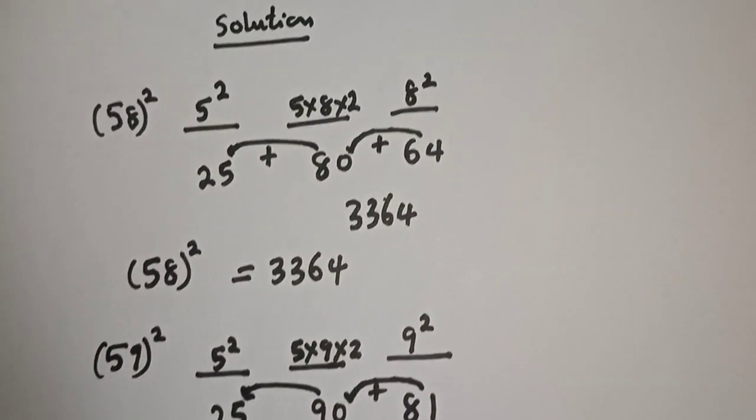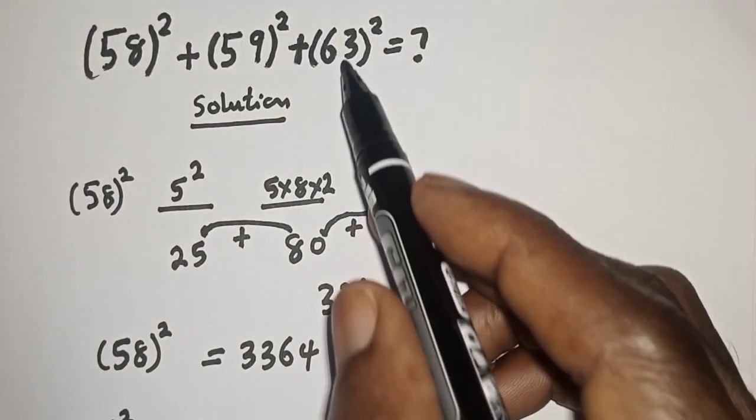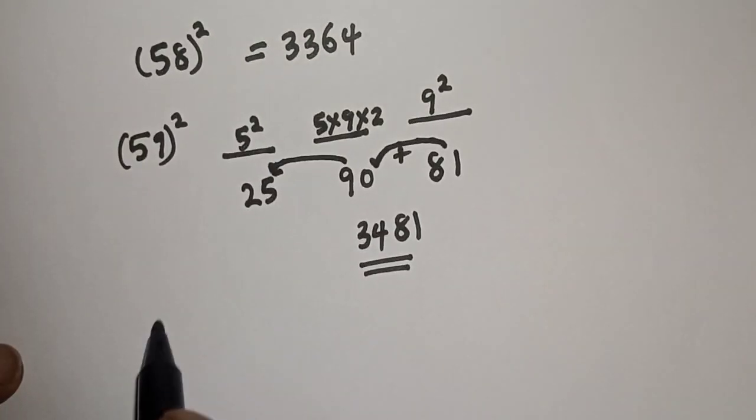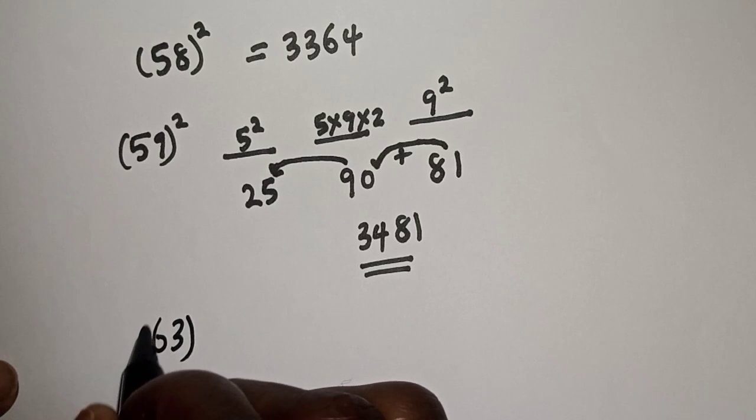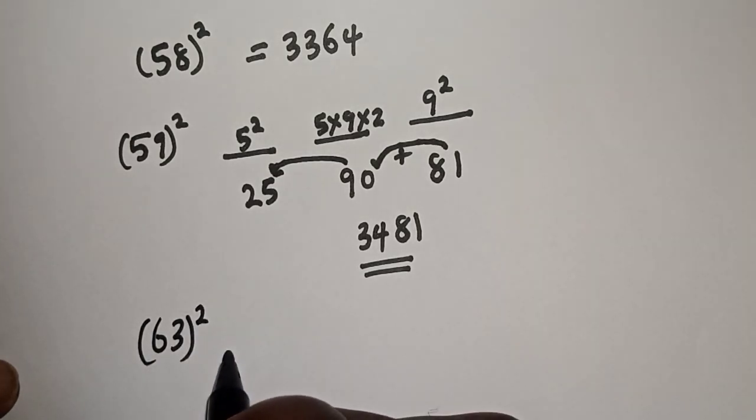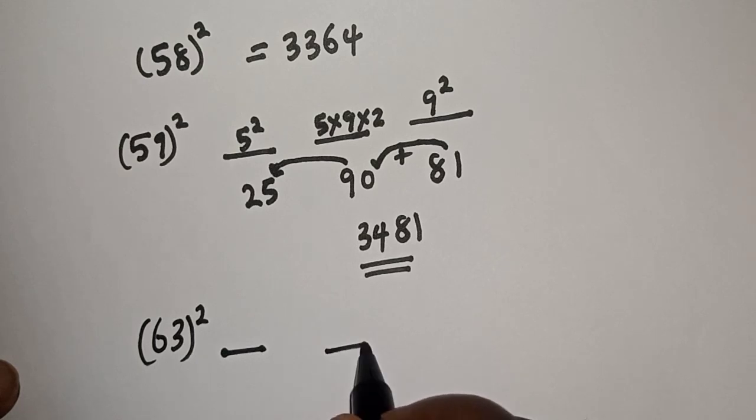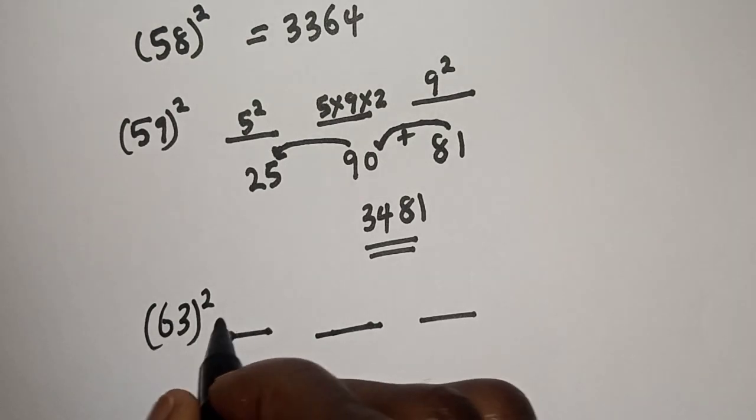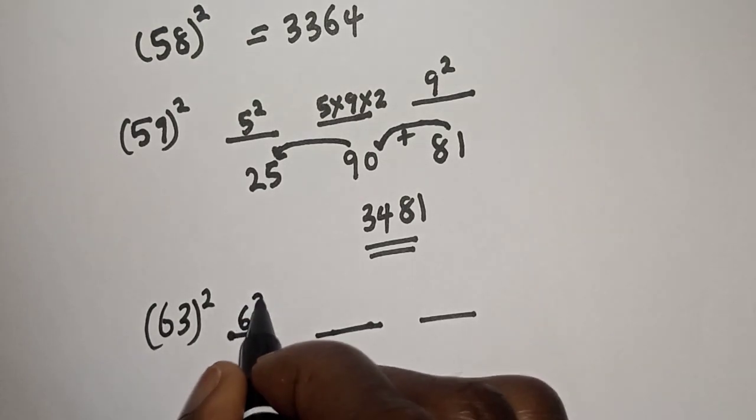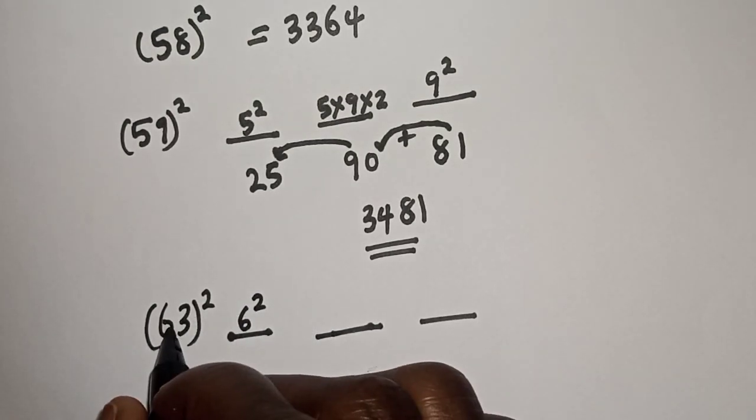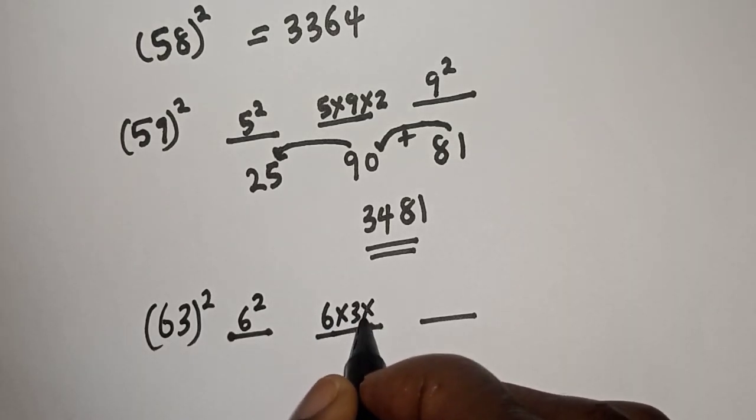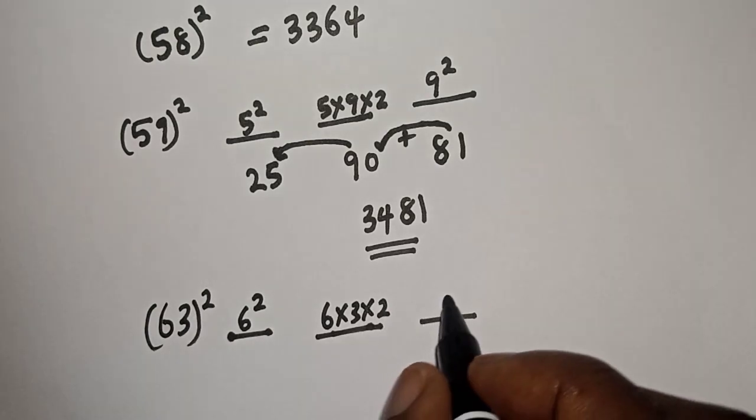So the third one is 63 square. Let's perform the trick again. The first one is 6 square, the next thing here is 6 multiply by 3 multiply by 2, and here is 3 square.